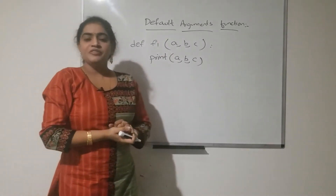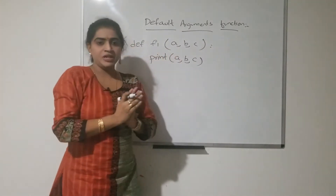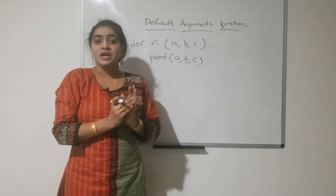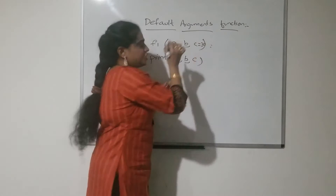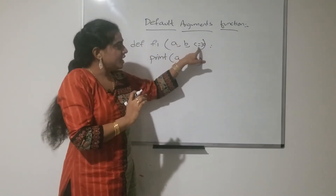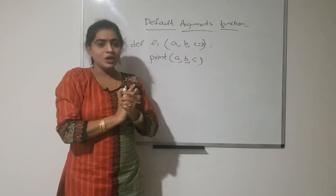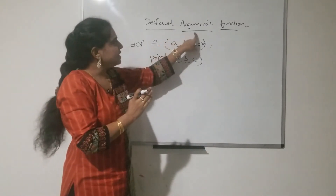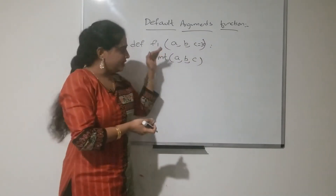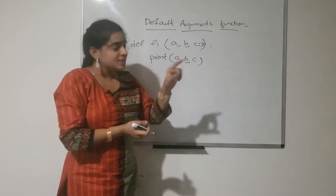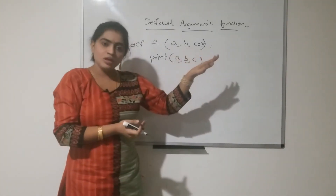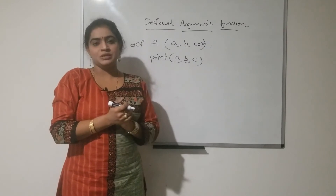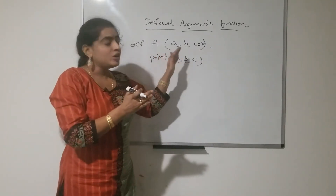Within the function definition, if you initialize some of the arguments using default values — initialization means specifying a value like this — then it is called a default arguments function. If you initialize some or all of the arguments using default values, those are called default argument functions.